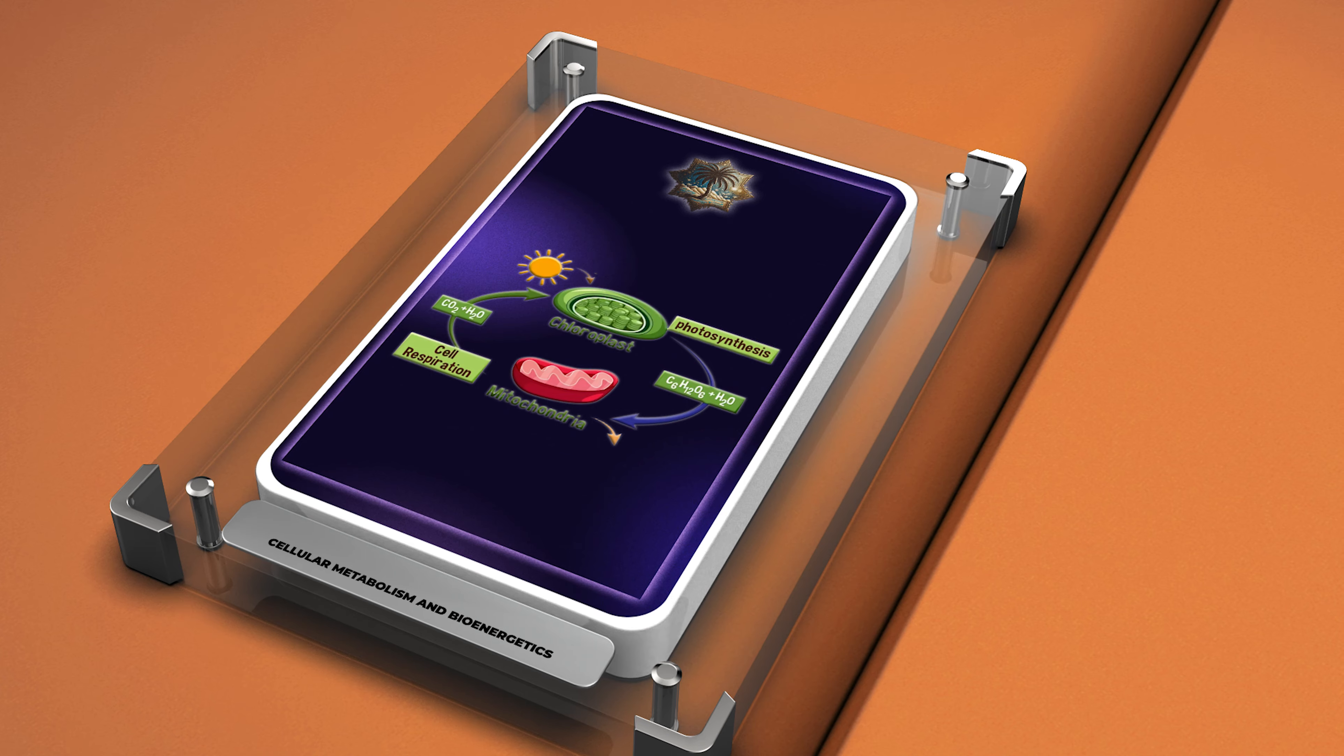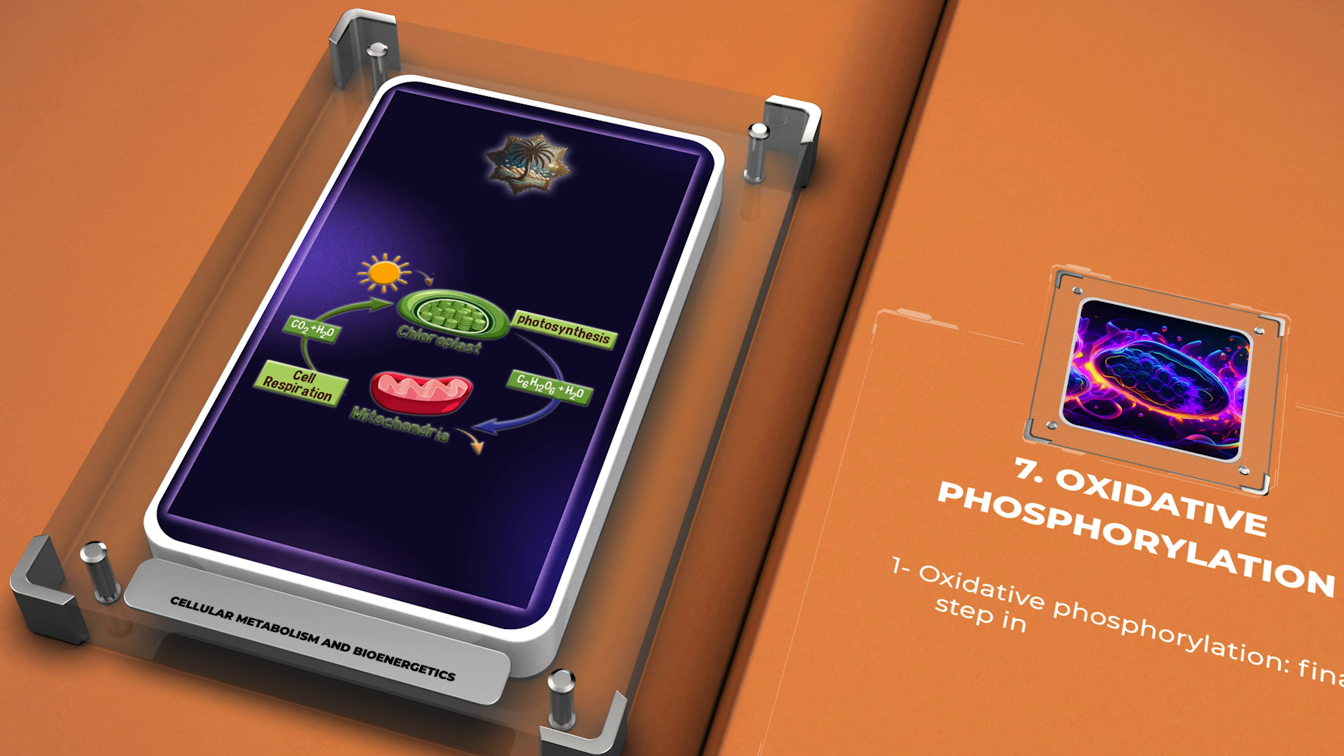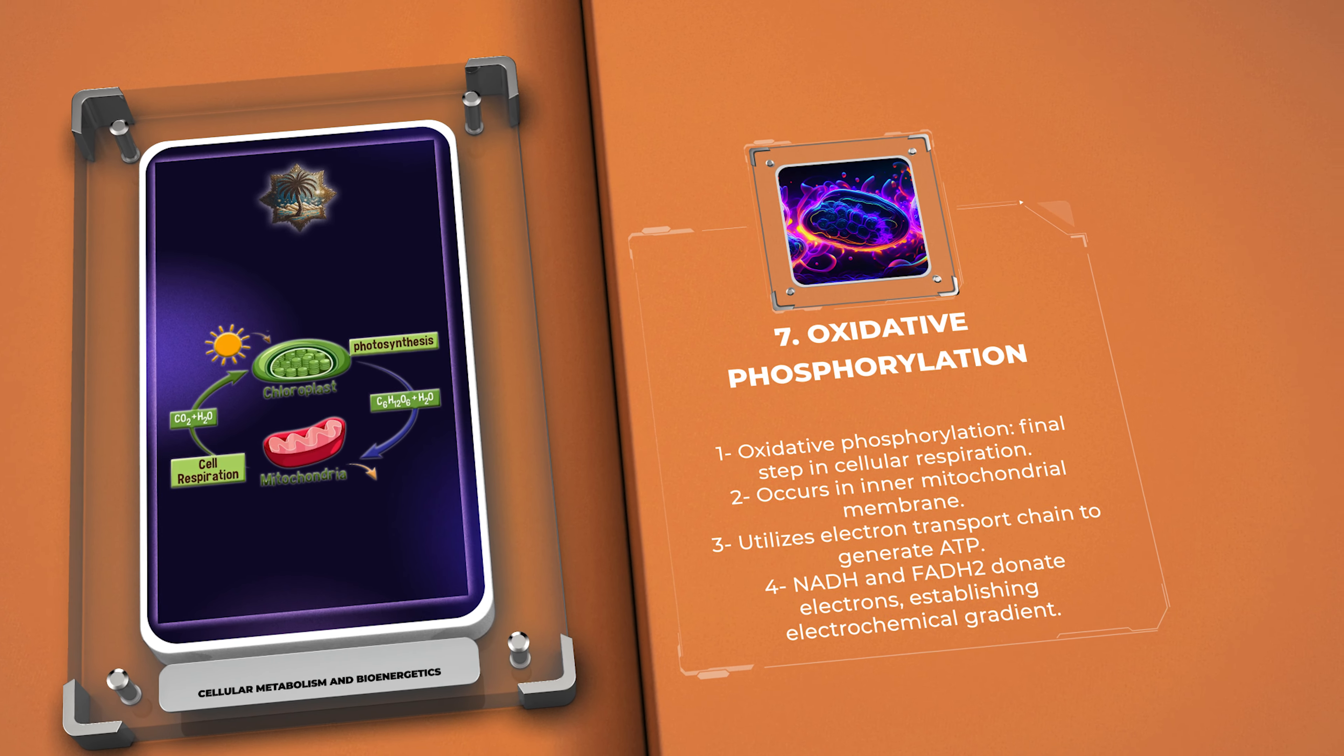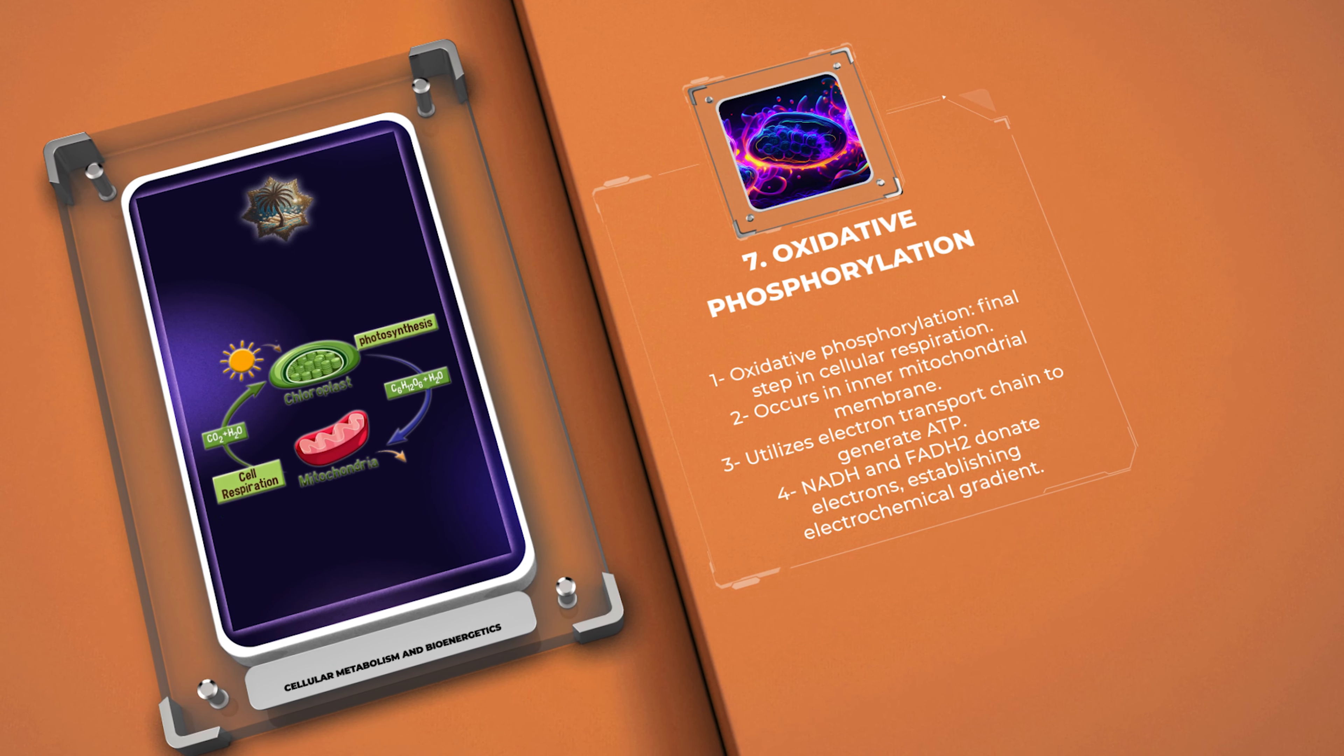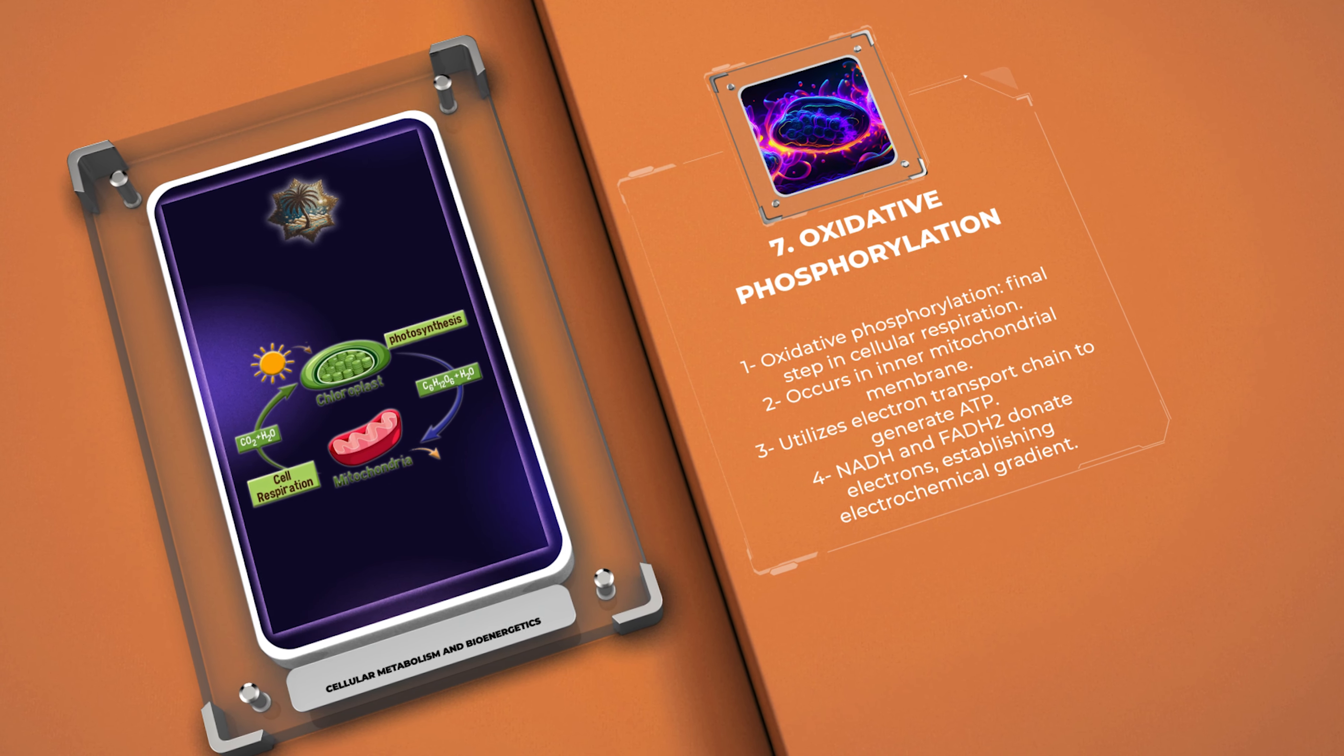Oxidative phosphorylation is the final step in cellular respiration. It occurs in the inner mitochondrial membrane, utilizing the electron transport chain to generate ATP. The electron carriers NADH and FADH2 donate electrons to the chain, leading to the establishment of an electrochemical gradient across the membrane. ATP synthase harnesses this potential energy to synthesize ATP.